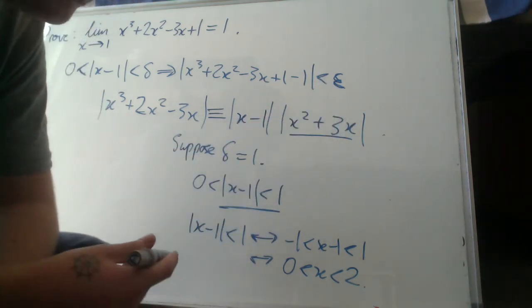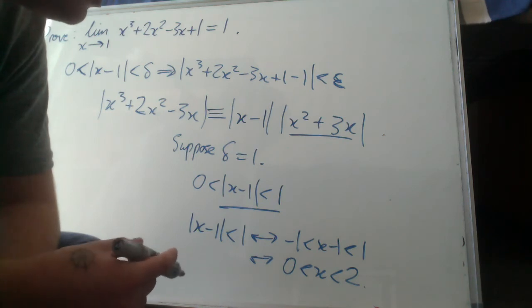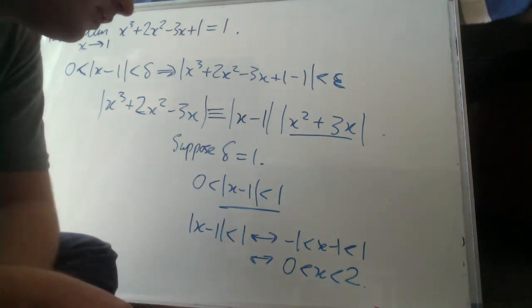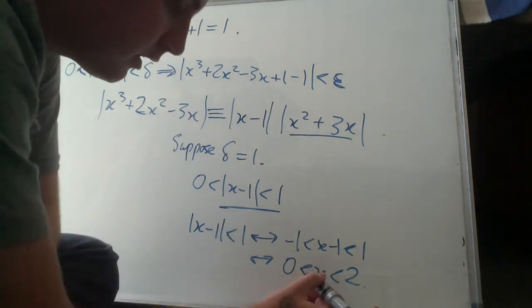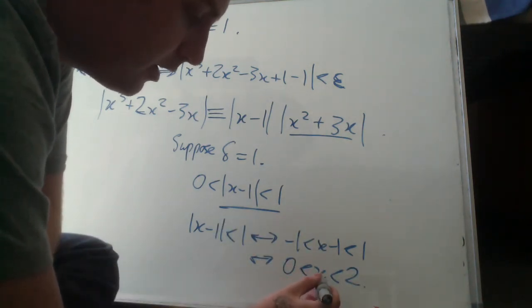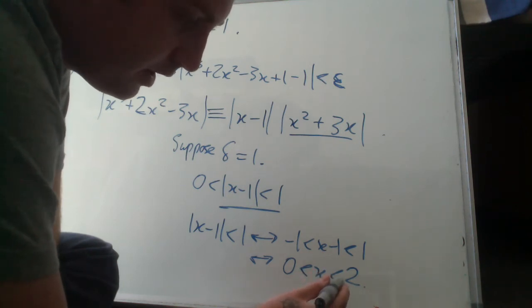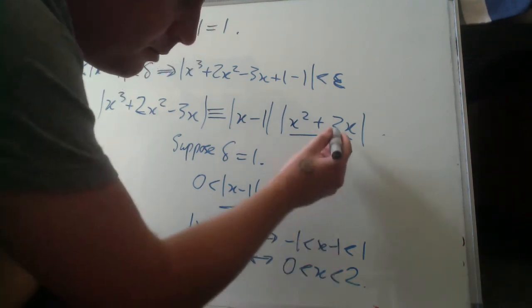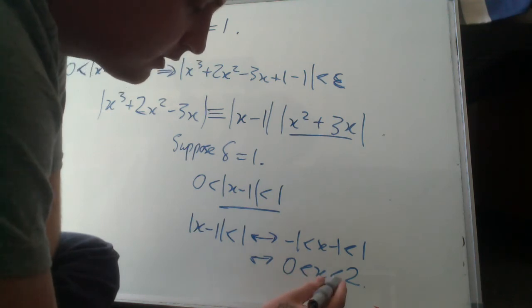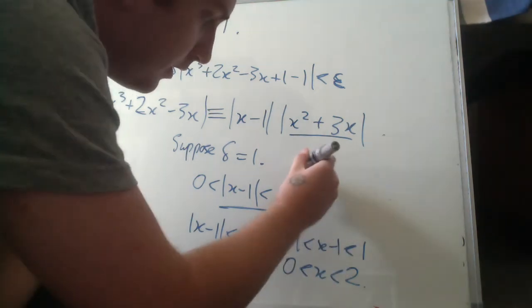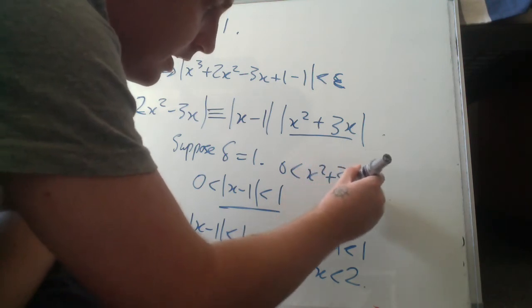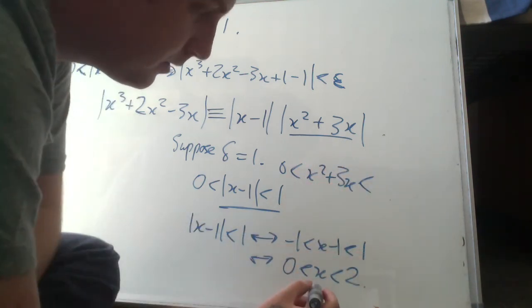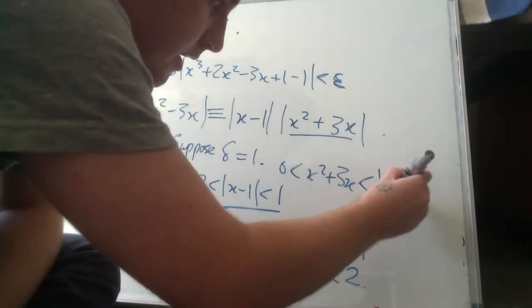And then we have a value that we can substitute for this. So we can get delta in terms of epsilon, well, delta in terms of epsilon multiplied by a constant or divided by a constant. Okay, so let's square it. 0 less than x squared less than 4 multiplied by 3. 0 less than 3x less than 6. So then we get x squared plus 3x less than 4 plus 6 less than 10.